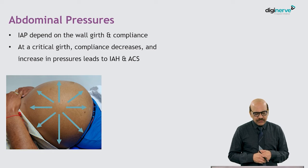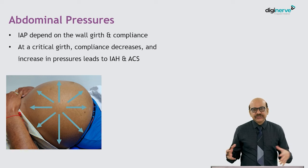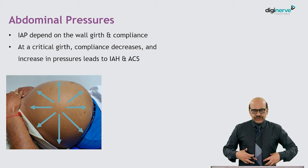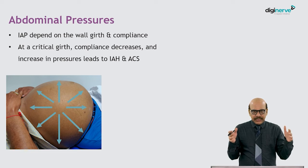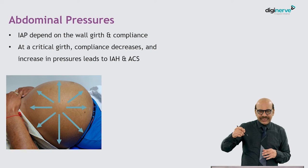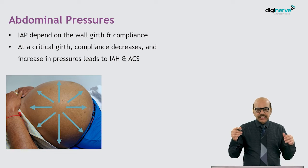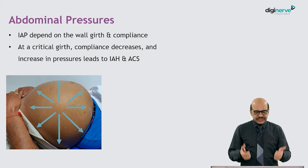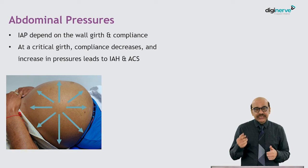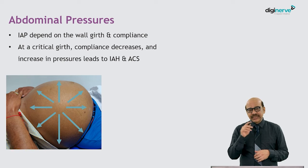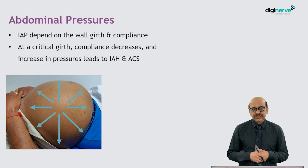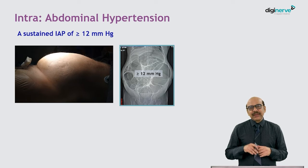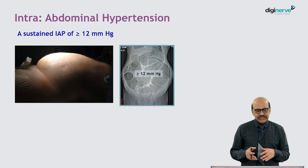Abdominal pressure depends on the wall girth as well as compliance. As pressure increases, the abdominal wall is relatively compliant and expands. But we reach a critical point where the abdominal wall is no longer compliant, and because it is a closed space, pressure steadily increases, resulting in hypertension within the abdominal cavity and thereby organ dysfunction, which we call abdominal compartment syndrome.